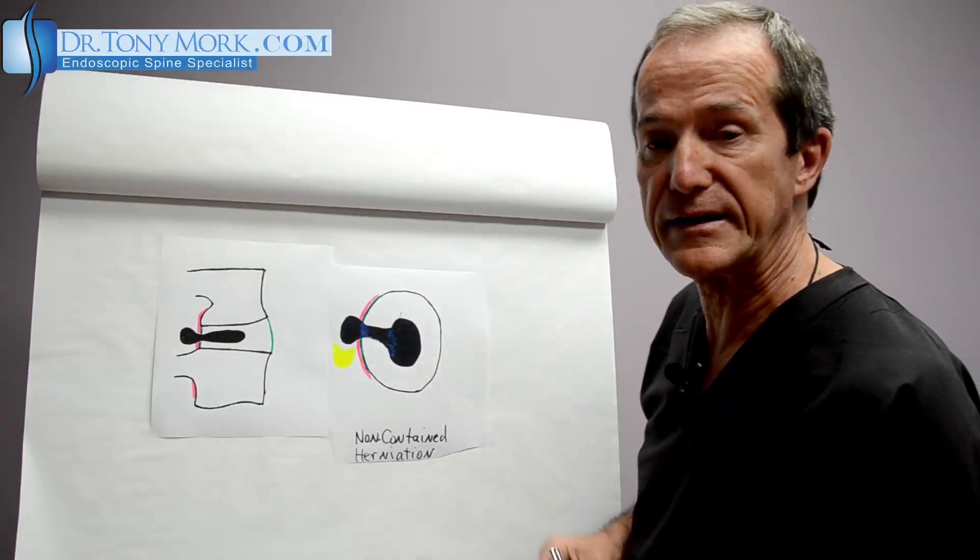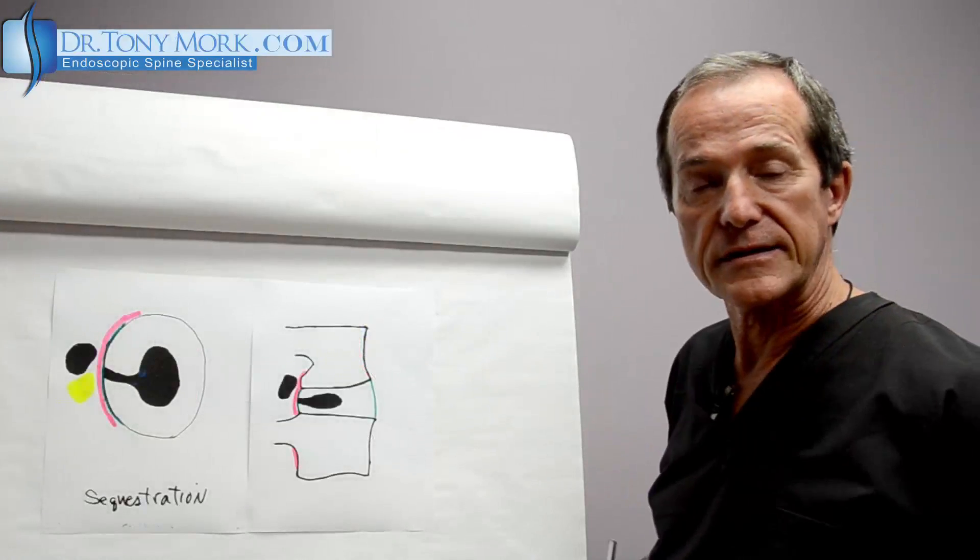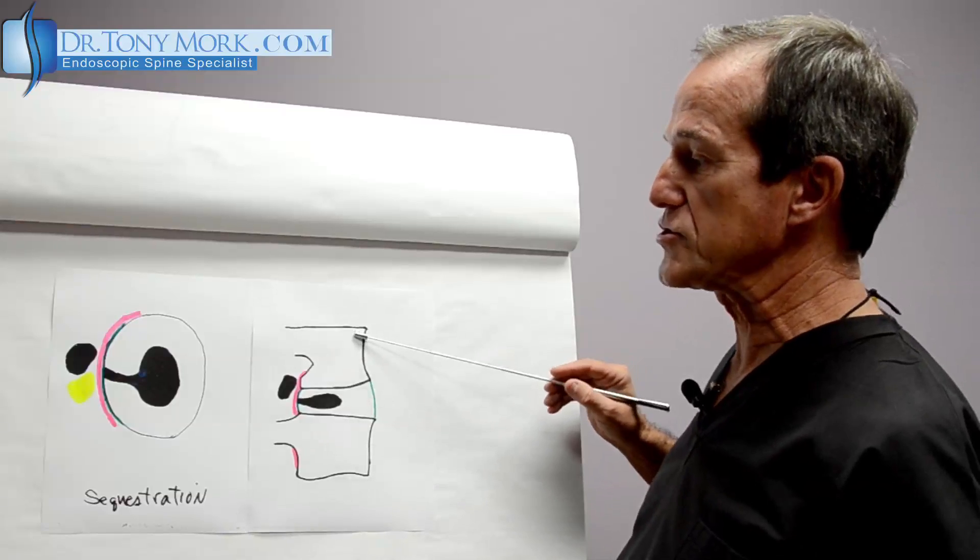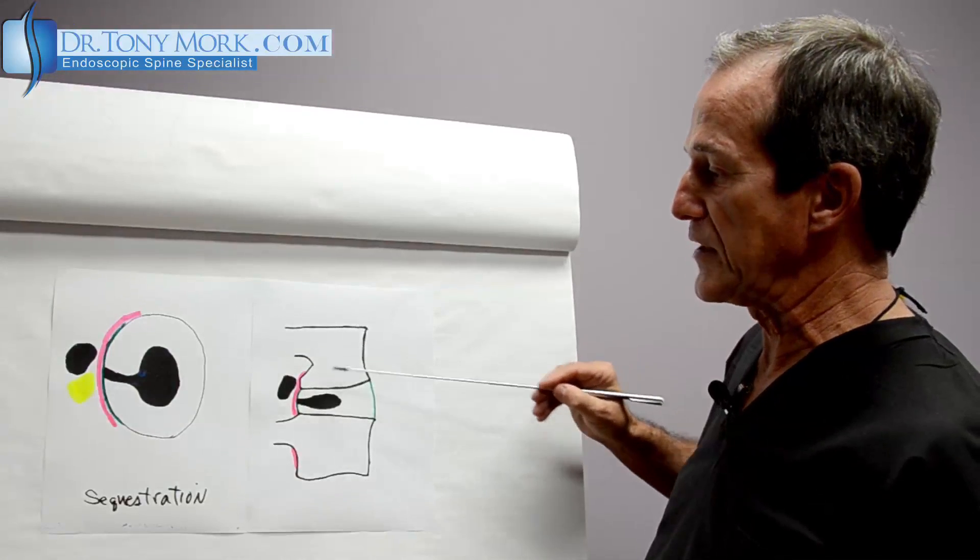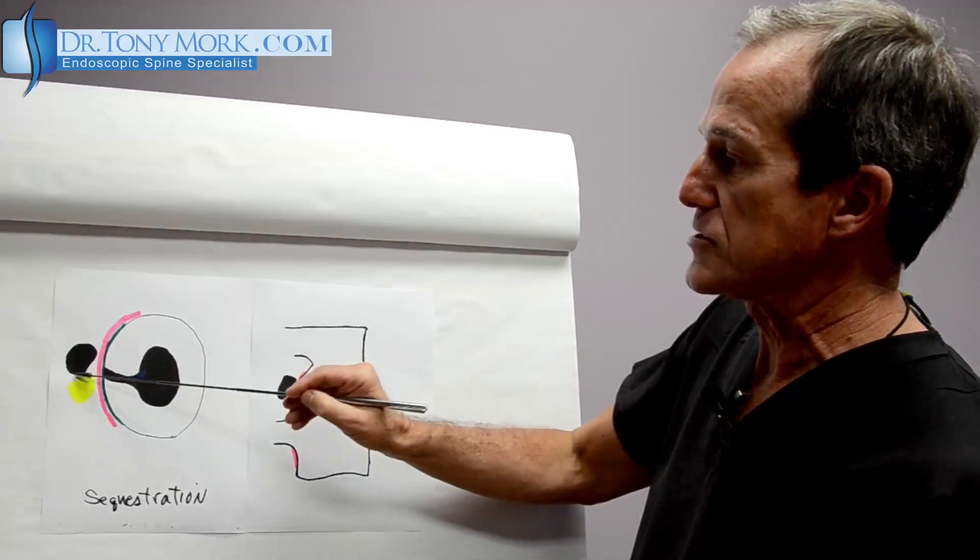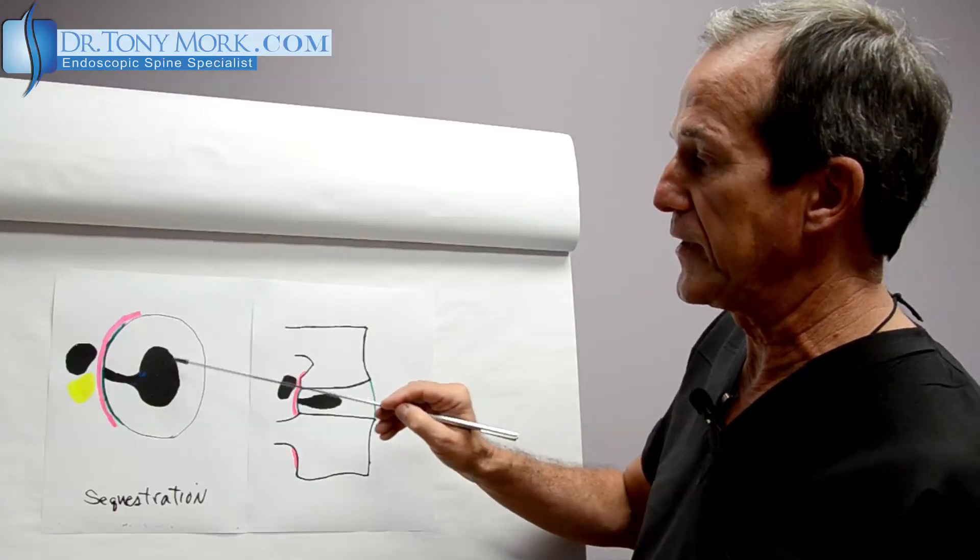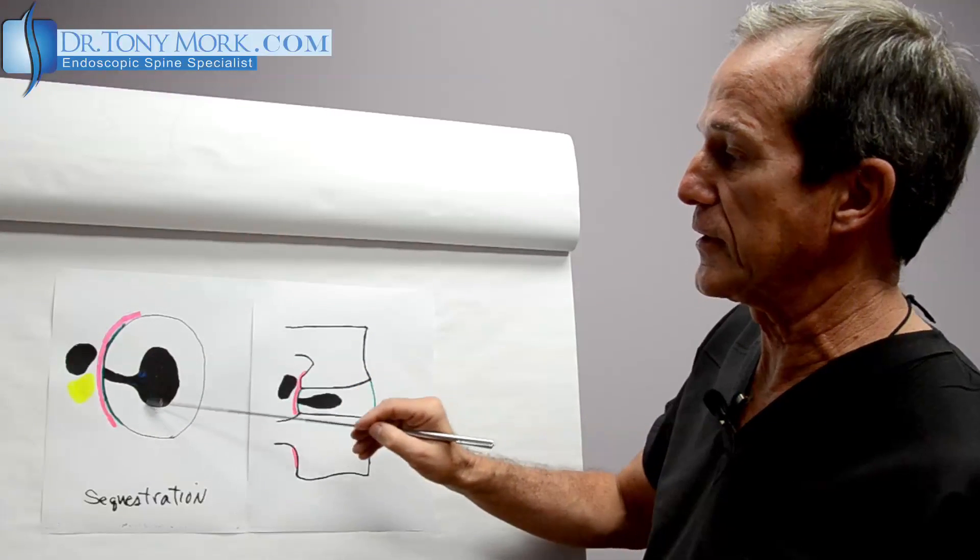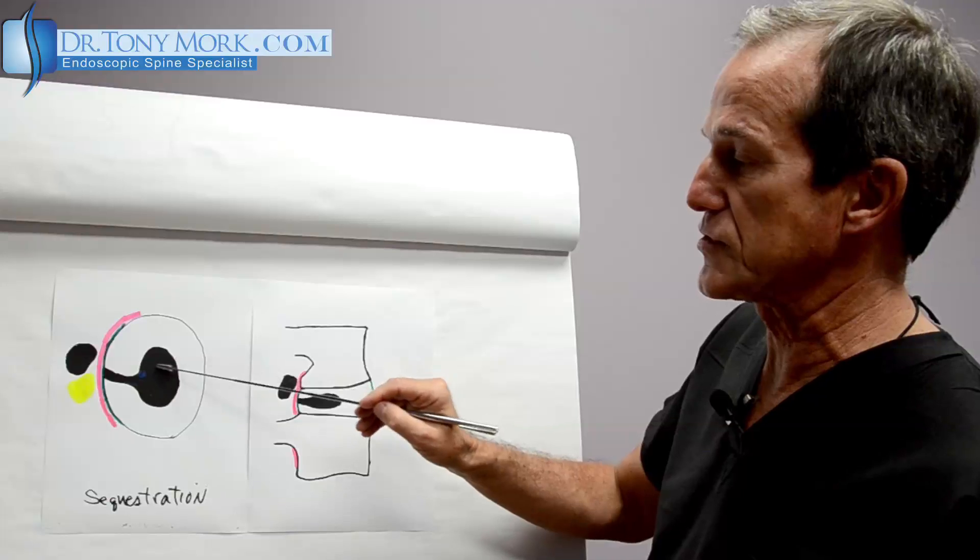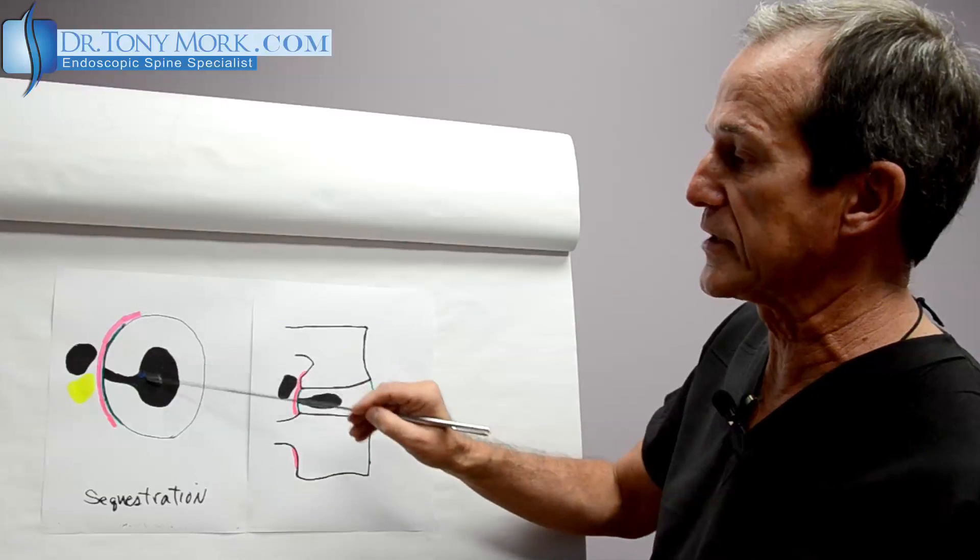So the last type of tear is a sequestered fragment. This means that a fragment here has lost complete continuity with the nuclear material, the nucleus itself.